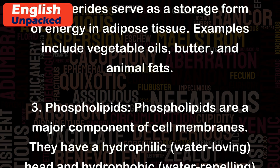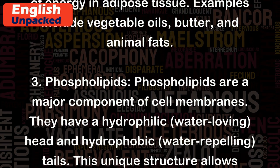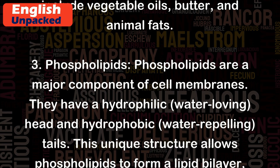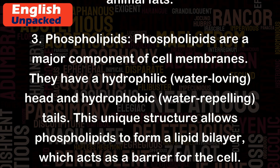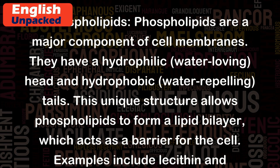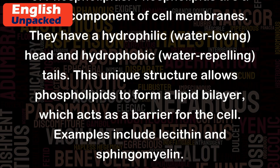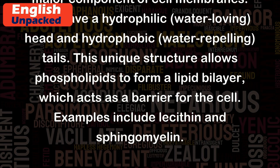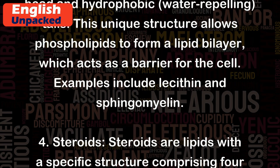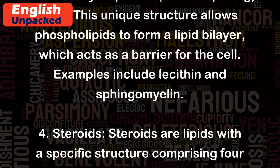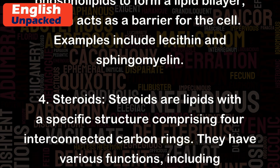3. Phospholipids. Phospholipids are a major component of cell membranes. They have a hydrophilic, water-loving, head and hydrophobic, water-repelling, tails. This unique structure allows phospholipids to form a lipid bilayer, which acts as a barrier for the cell. Examples include lecithin and sphingomyelin.